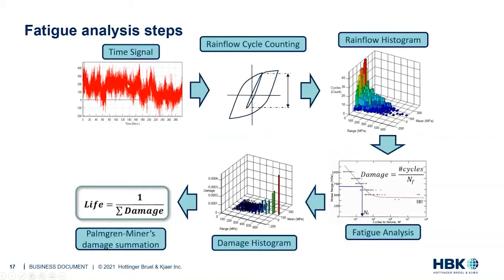The local stress comes out of the FE model at every node or element. We do a rainflow cycle count — which if elastic-plastic has a hysteresis loop. We rainflow count it into a rainflow matrix: at one end, lots of little cycles doing very little damage; at the other end, a few big cycles doing most of the damage, and a mean axis. We look each cycle up on a fatigue curve — an SN curve or strain-life curve — calculate how many cycles it could sustain, and sum the damage using Miner's summation. That basic process is the same for quasi-static and dynamic.